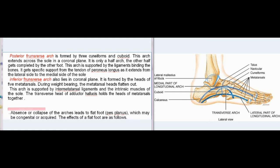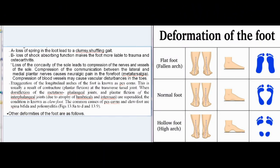Clinical anatomy: Absence or collapse of the arches leads to flat foot (pes planus), which may be congenital or acquired. The effects of a flat foot are: A. Loss of spring in the gait, leading to a clumsy shuffling gait. B. Loss of shock-absorbing function makes the foot more liable to trauma and osteoarthritis. C. Loss of the concavity of the sole leads to compression of the nerves and vessels of the sole. Compression of the communication between the lateral and medial plantar nerves causes neurologic pain in the forefoot — metatarsalgia. Compression of blood vessels may cause vascular disturbances in the toes.